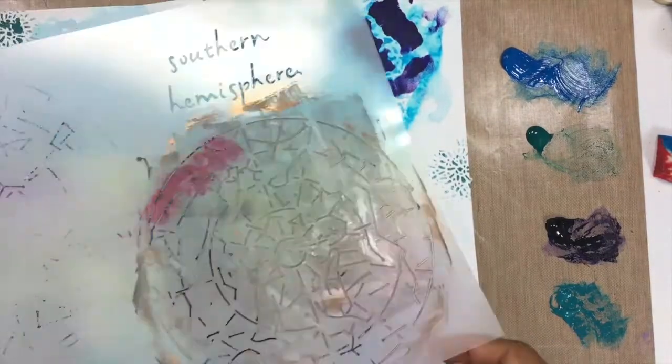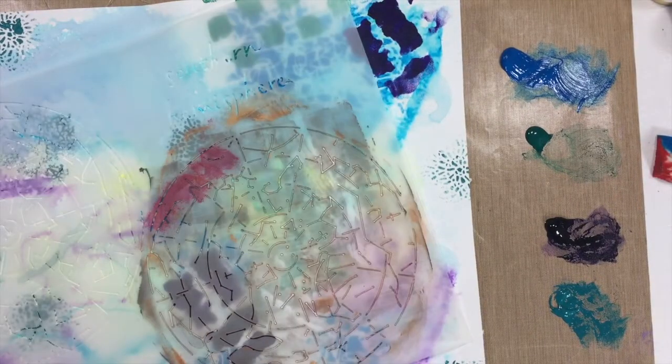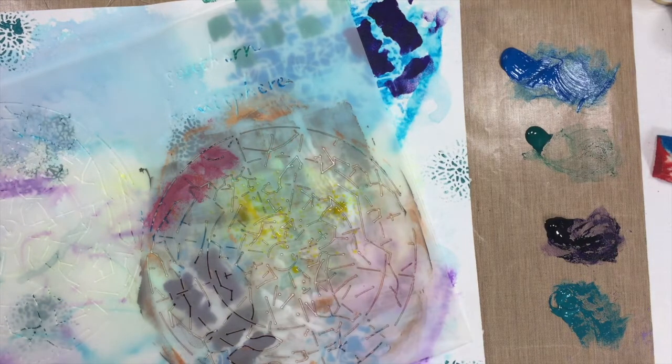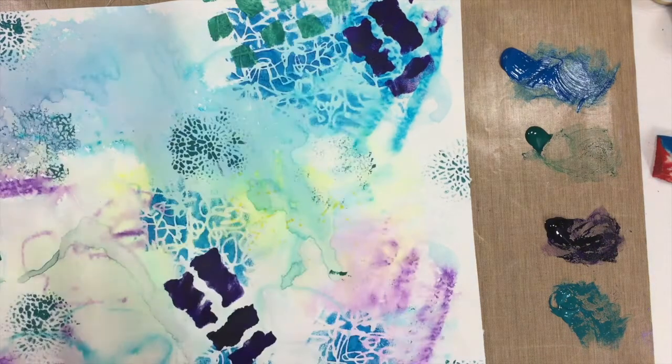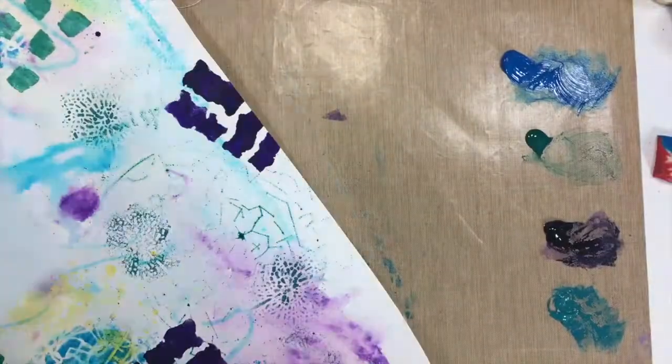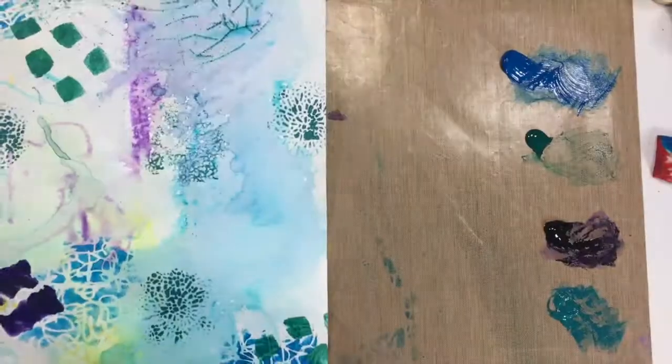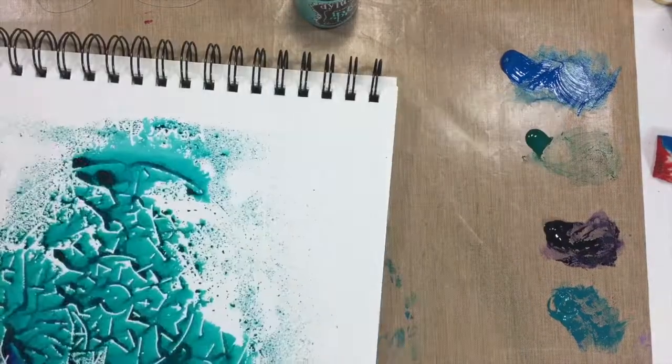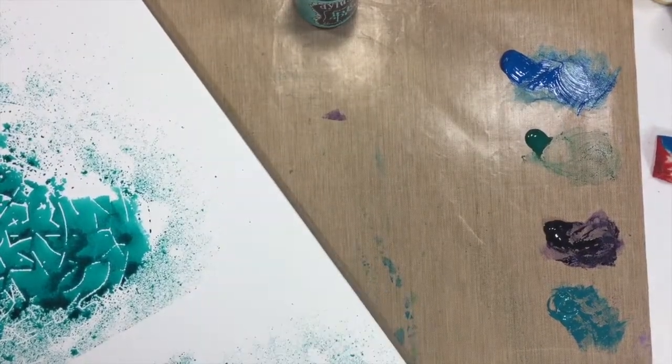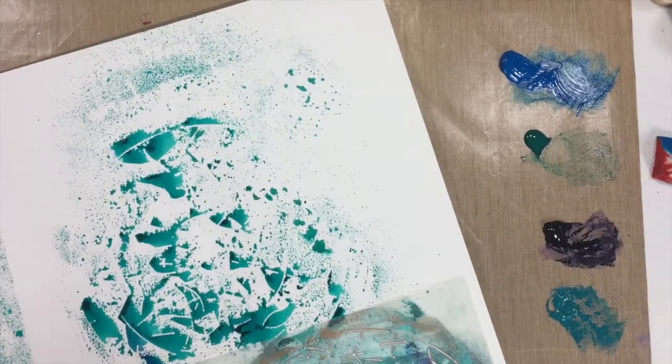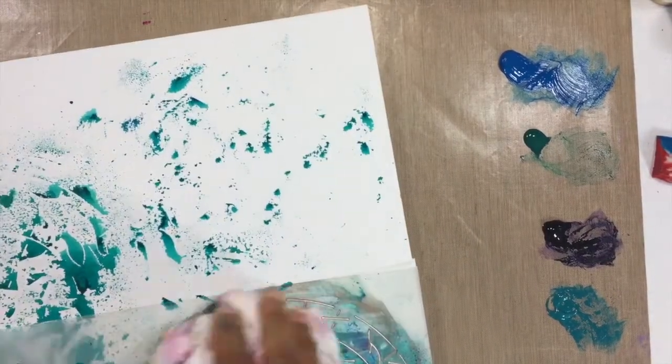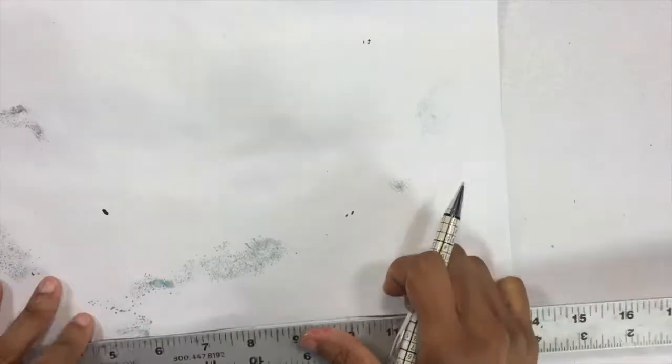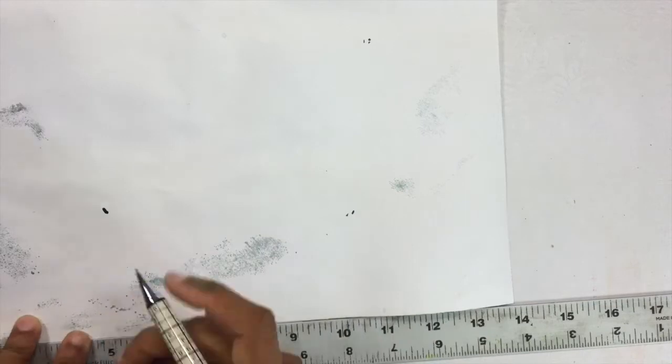Next I'm coming in with some Dylusions sprays and this Southern Hemisphere stencil from Mary Nasser. I love all of the map-oriented stencils. I'm using the Dylusions spray to spray that, and I'm showing you here really quickly that I have another pad of paper over to the side. I'm using it to wipe that stencil off because that's some good inkiness that I want to save.